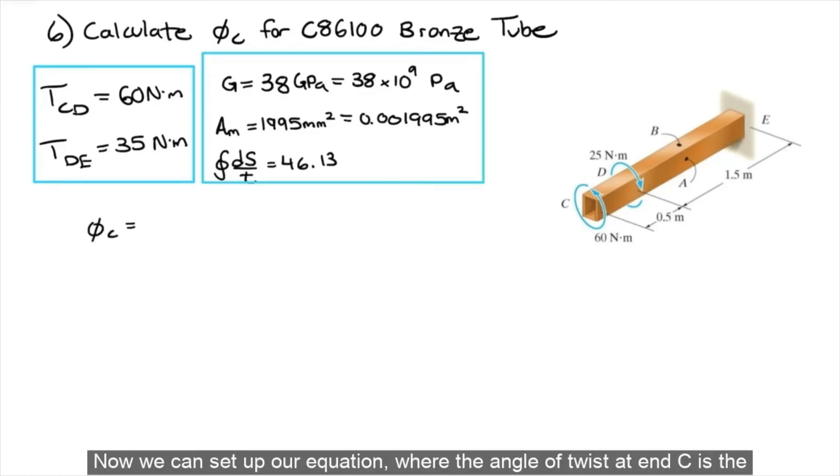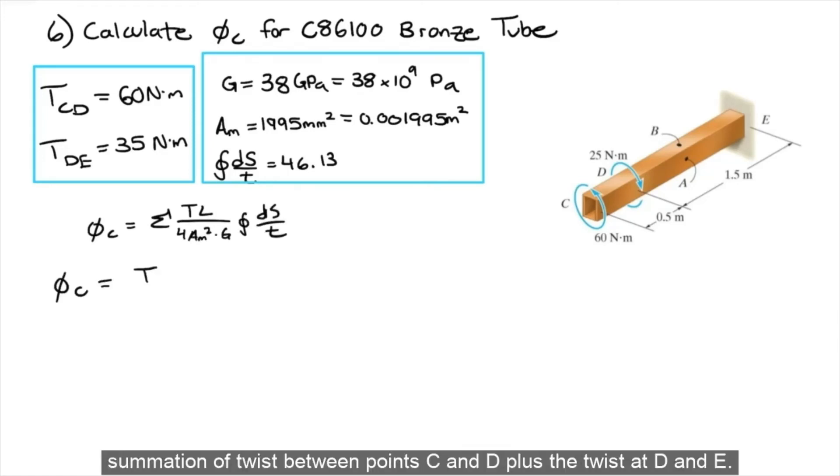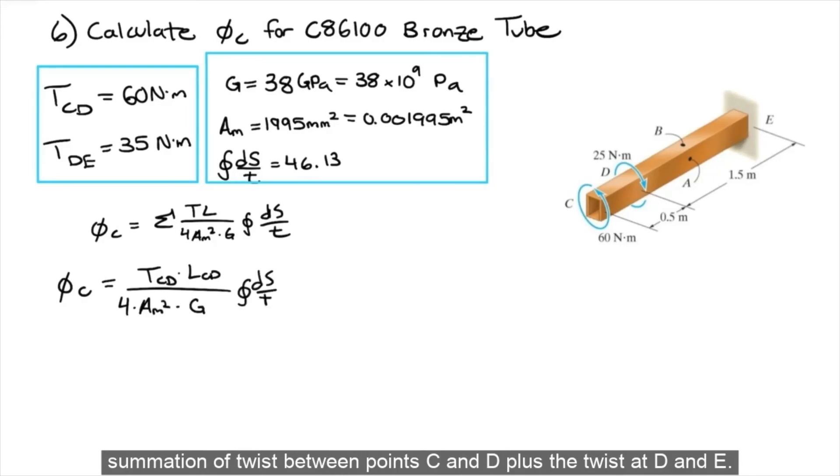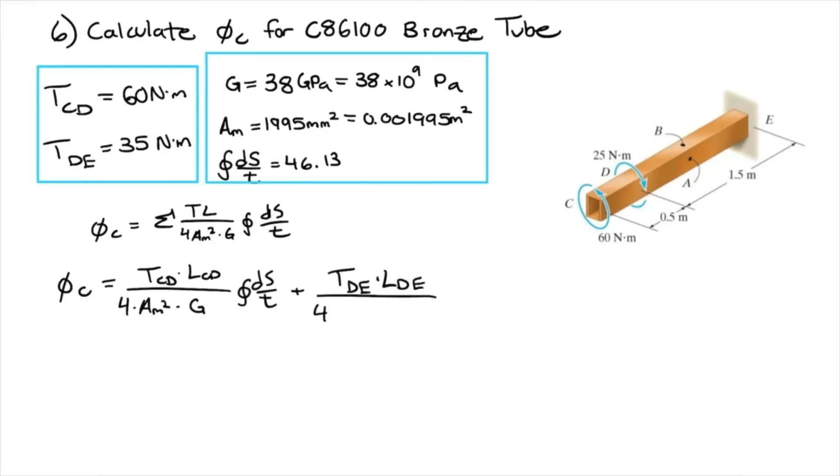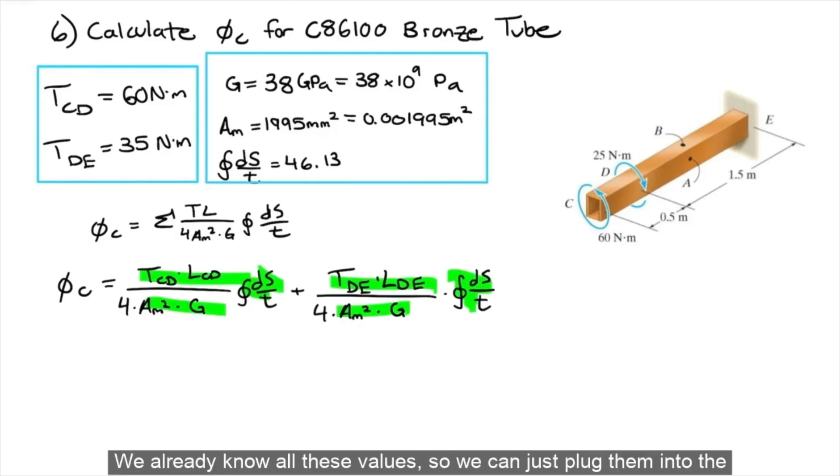Now, we can set up our equation where the angle of twist at NC is the summation of twist between points C and D plus the twist at D and E. We already know all these values, so we can just plug them into the equation and solve.